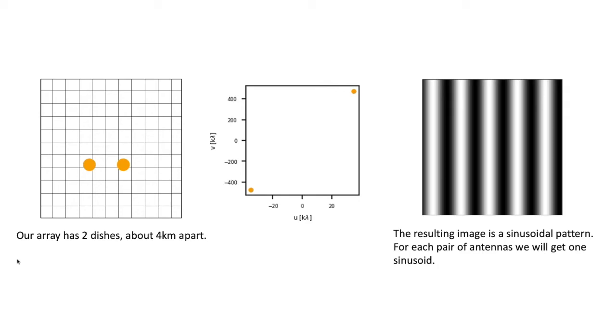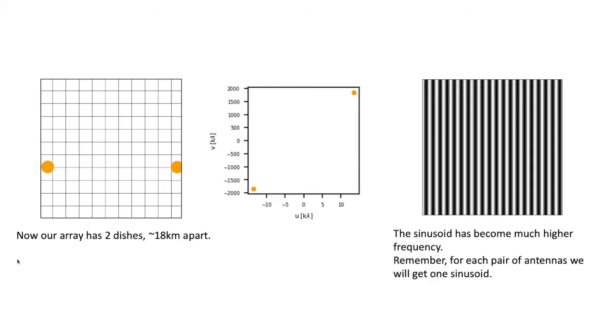So if we move our two dishes further apart we become sensitive to smaller spatial scales, so larger spatial frequencies. On the left we have moved our dishes to 18 kilometers apart, the u and v points have now moved further apart on their respective axes, and the sinusoidal pattern has become much higher frequency so we're looking at smaller spatial scales. Again I emphasize that if we had more pairs of antennas then we would get more than one sinusoid and that's something we will look at on the next slide.